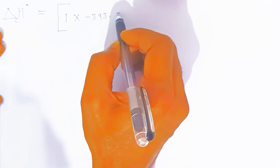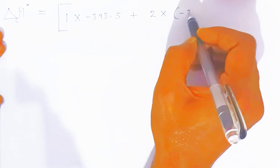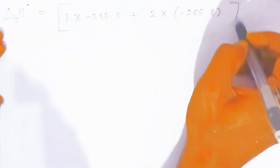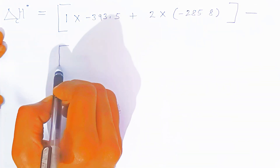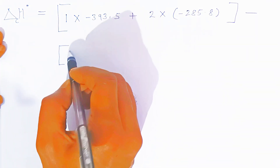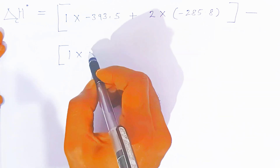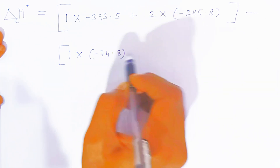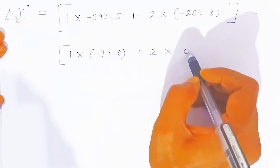Now substituting the values: ΔH°reaction = [1×(−393.5) + 2×(−285.8)] − [1×(−74.8) + 2×(0)]. Two times 285.8 gives 571.6, and the oxygen term becomes zero. So we have: −393.5 + (−571.6) minus (−74.8), and the minus-minus becomes plus 74.8.